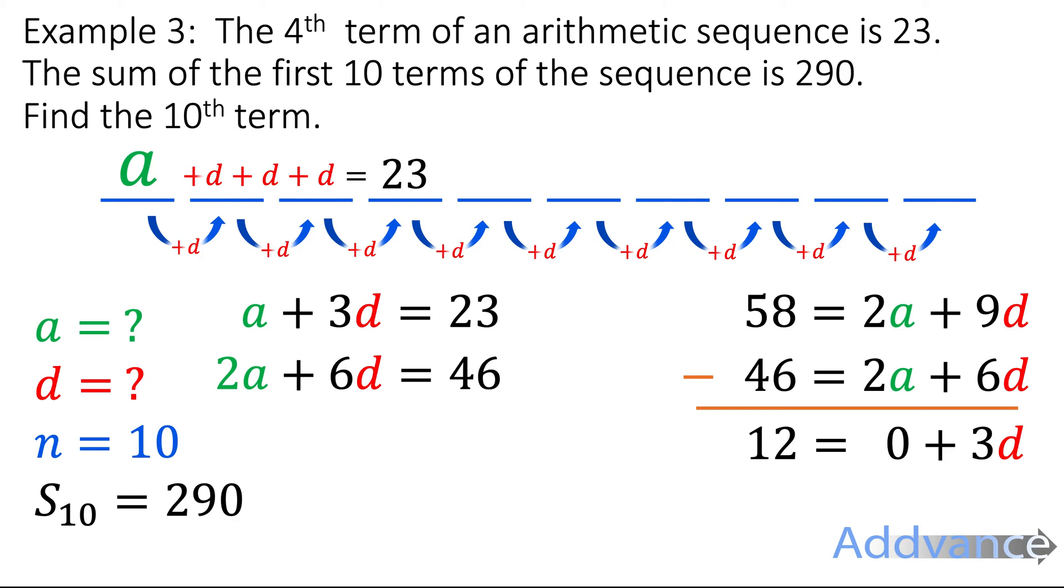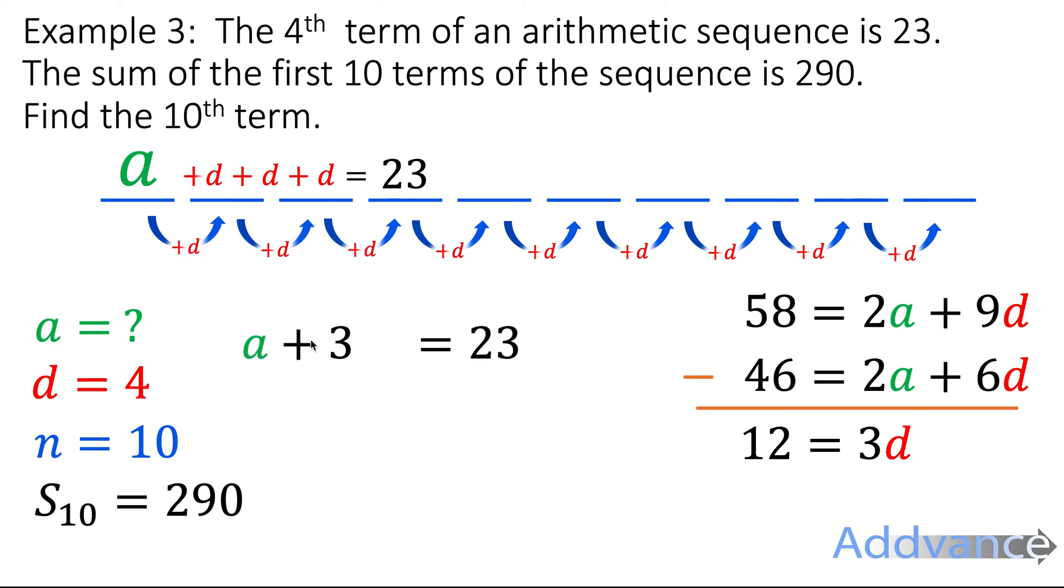12 is equal to 3D. I divide by 3 and I get D is equal to 4. And now I know what D is. I can work out what A is by substituting it into this equation over here. A plus 3 times 4 is 23. A plus 12 is 23. I take 12 off both sides and I get that A is equal to 11.